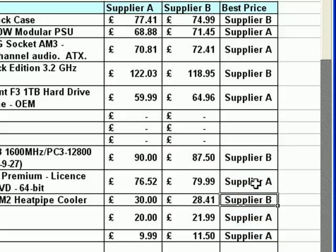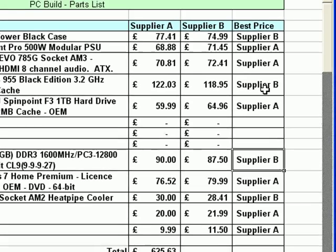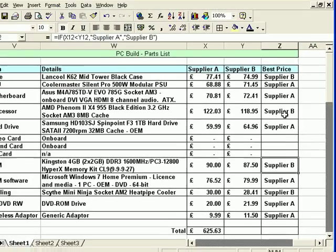So that's just a very simple example of using the IF function. You can see how quickly it is to create, and you can see the different parts of the function. It just gives you some useful information, and sometimes it's a quicker way of identifying which is the best value. You can obviously compare the values but that's a nice quick way of just saying which supplier is the best.